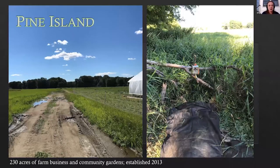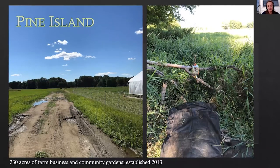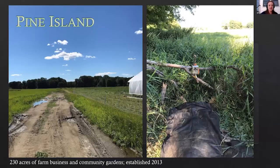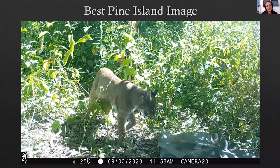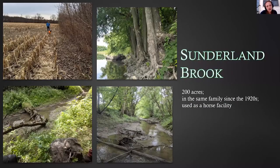The best image from the hundreds we got from the Intervale is this one — a coyote lurking in the bushes near the conservation nursery. A friend who worked at the nursery swore she saw coyotes all the time, but no one believed her. I was very gratified to get this photo and prove her right. Moving on to Pine Island: immediately across the river from the Intervale, 230 acres, with farm businesses and community gardens. Vermont Land Trust bought it in 2013. If you've ever had the opportunity to go to Pine Island in early January and feed your Christmas trees to the goats, I strongly recommend it. What did we see there? A ton of raccoons, some skunks, some deer, some possums, a lot of squirrels, and we saw an otter. Our best photo from Pine Island is this bobcat — we caught it coming and going, and I just love the cat's facial expression in this photo.